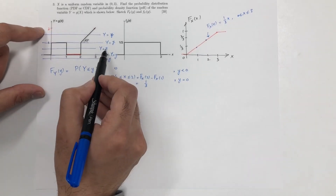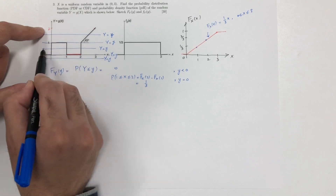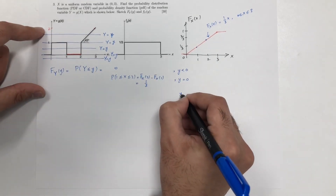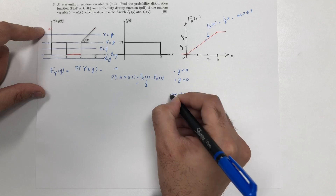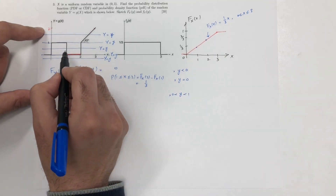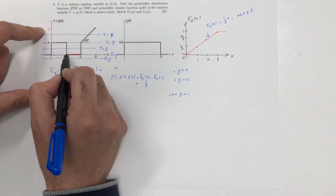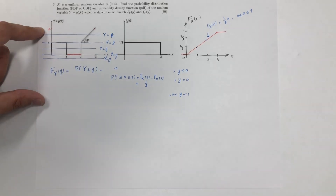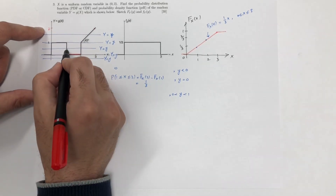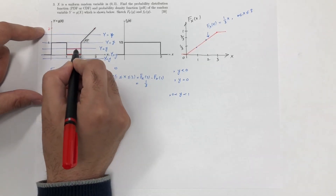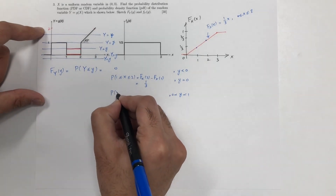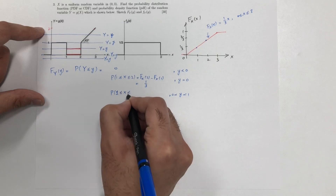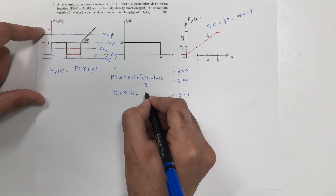When small y is between 0 and 1, the black solid line is below it in the same region, so x is again between 1 and 2. This gives us the probability that x is between 1 and 2, which is again 1/3.